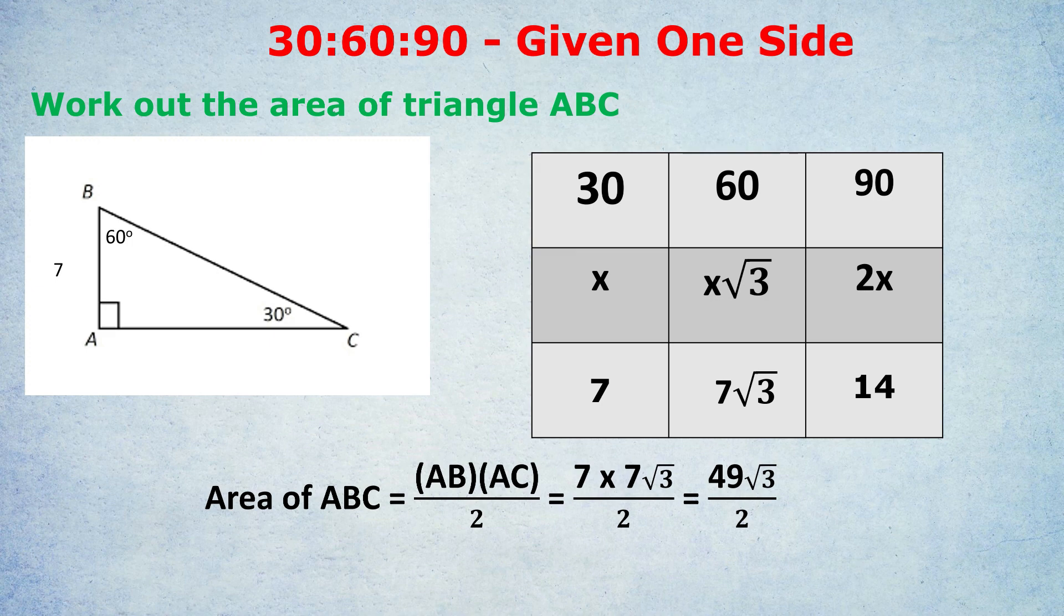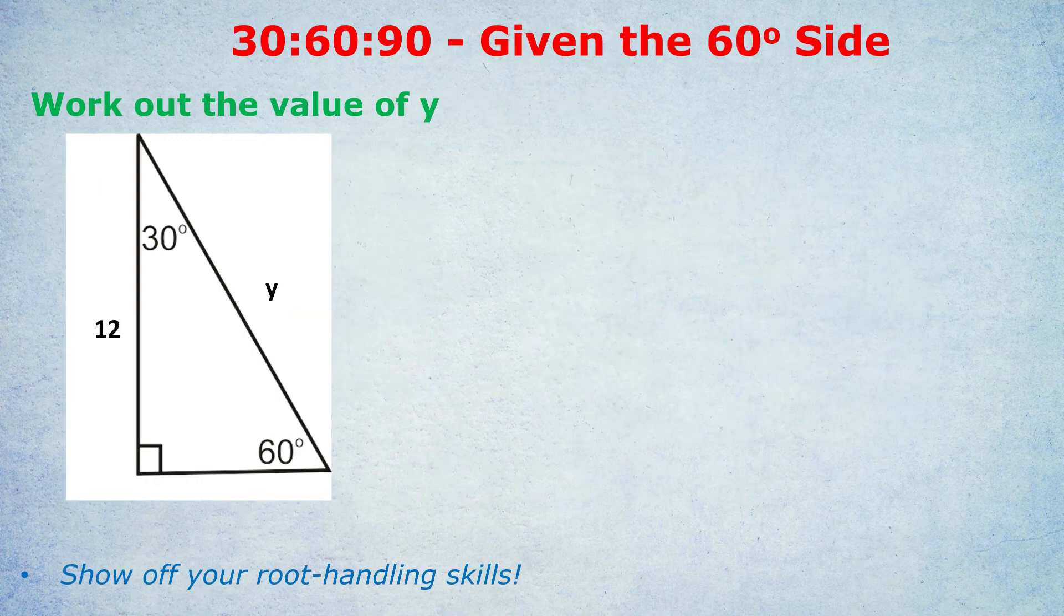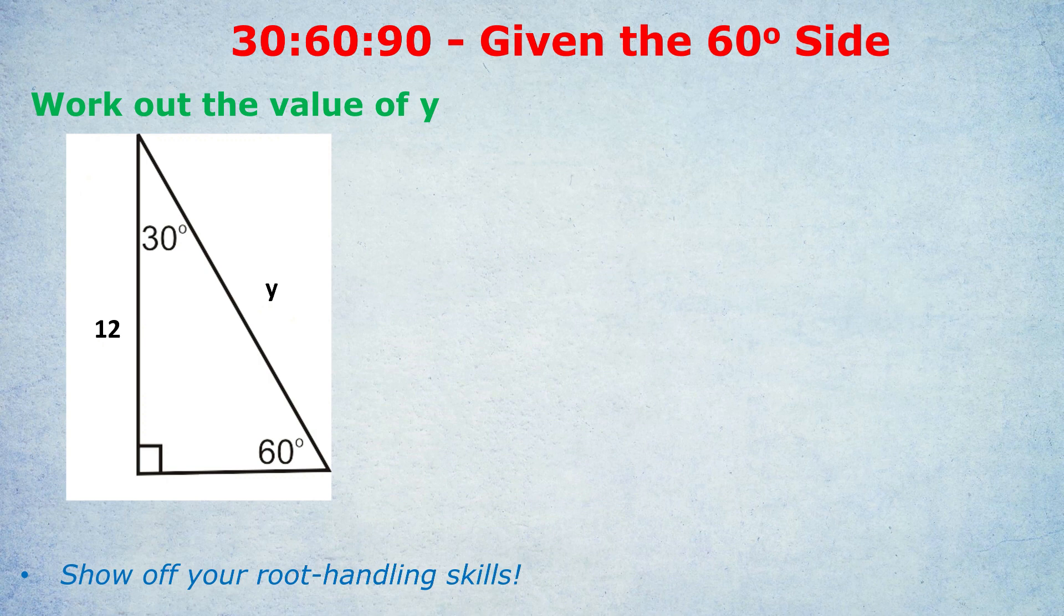I can tell that you're really enjoying this 30-60-90 triangle topic, so I'm going to step up a notch. There is one thing they can do to make things particularly hard, and they can give us the side that's opposite to the 60 degrees. That makes things a bit harder. We have to show off our root handling skills to get this right. So again, you can watch my other videos and revise how to handle roots to understand what I'm doing. But the core essence of solving this problem is using the box that we've done in the previous questions.